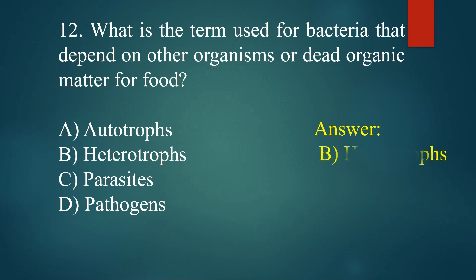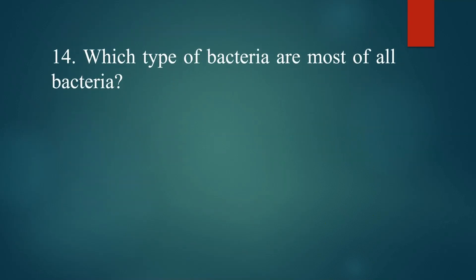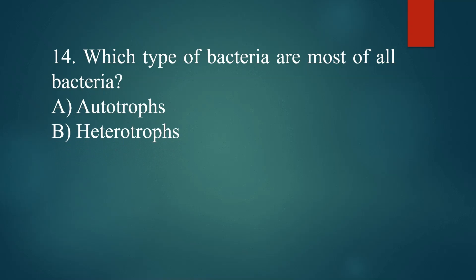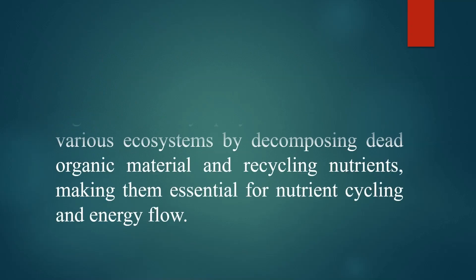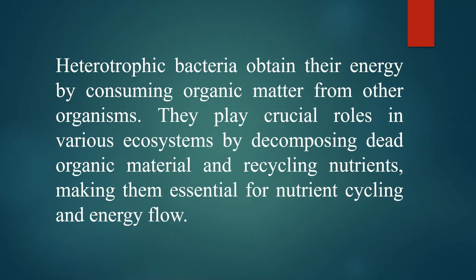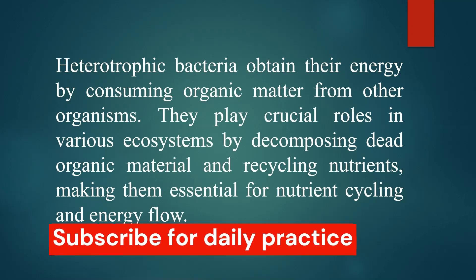Which type of bacteria are the vast majority of all bacteria? A. Autotrophs. B. Heterotrophs. C. Photosynthetic. D. Pathogenic. Answer: B. Heterotrophs. Heterotrophic bacteria obtain their energy by consuming organic matter from other organisms. They play crucial roles in various ecosystems by decomposing dead organic material and recycling nutrients.